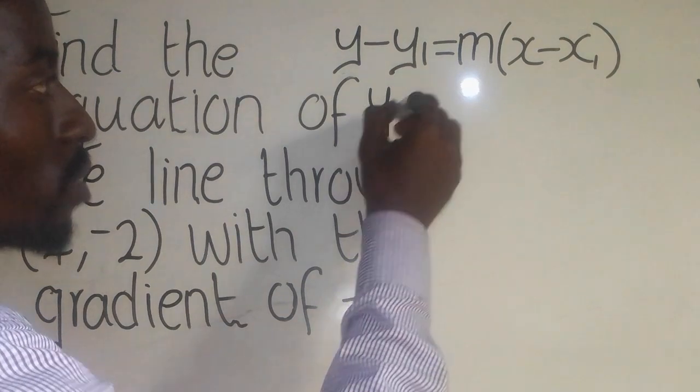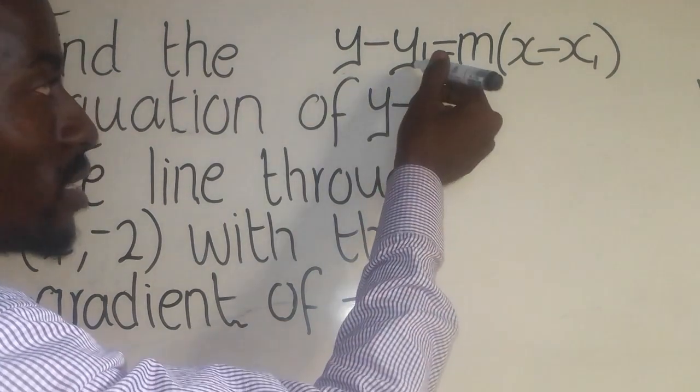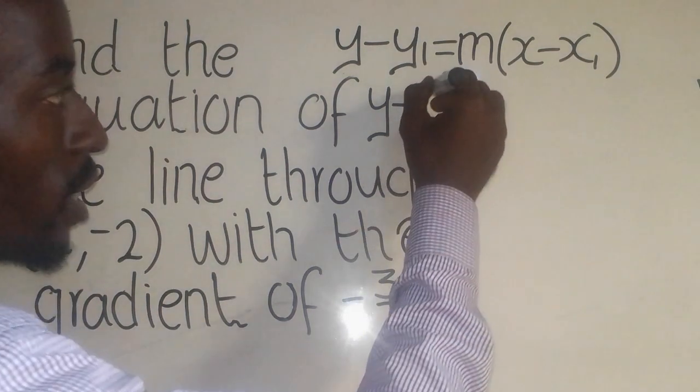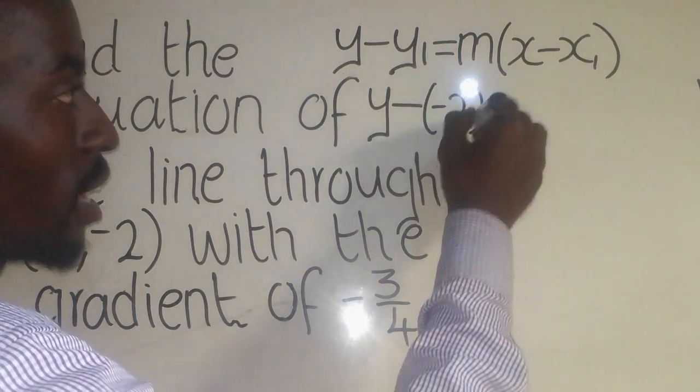So y will come down the way it is, minus. What is y1? y1 is negative 2. So here, you put negative 2 there, equal.